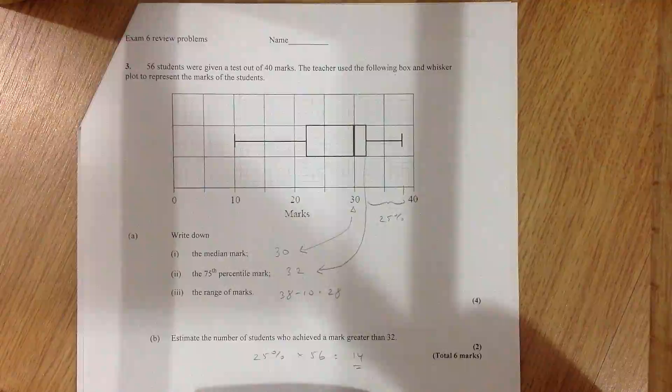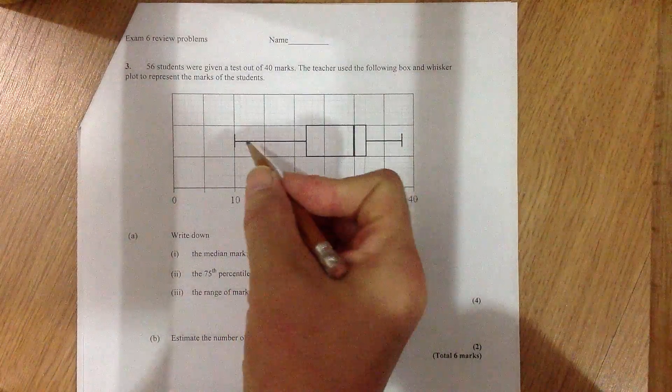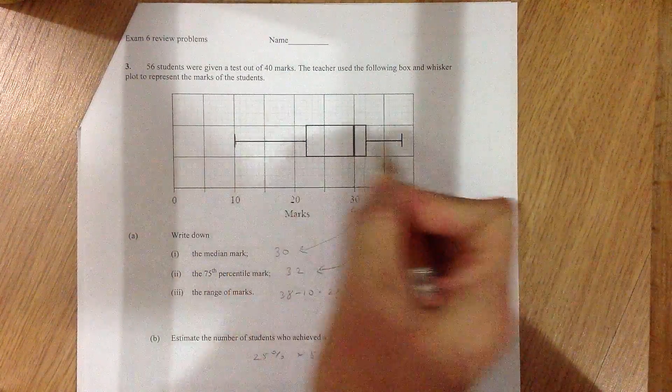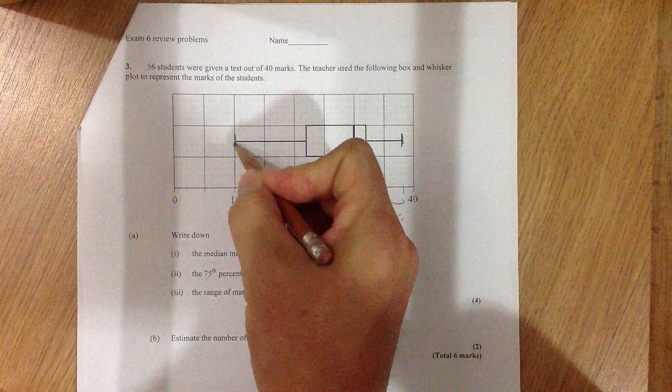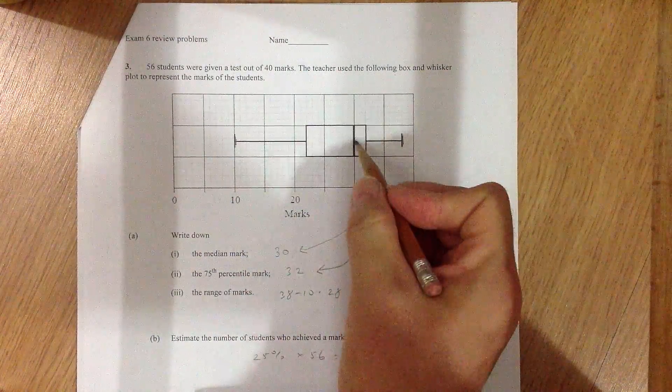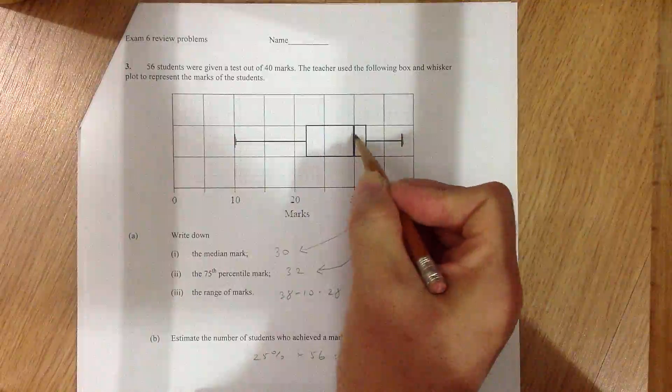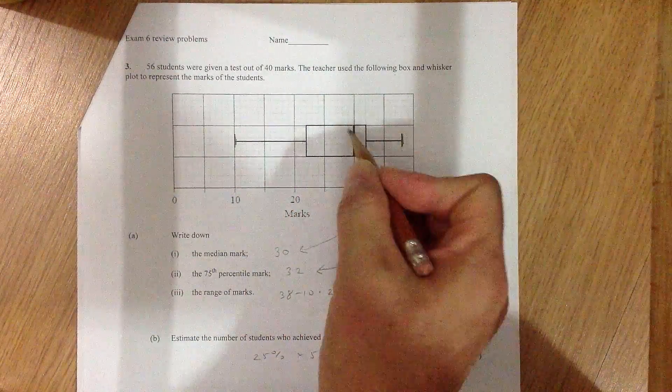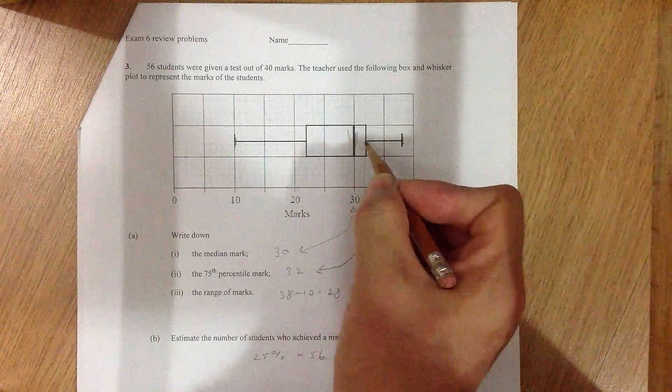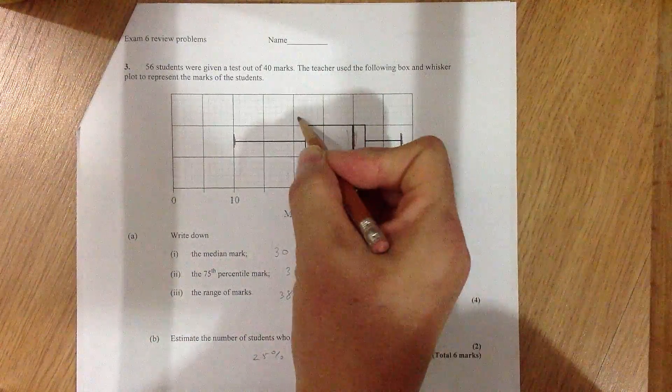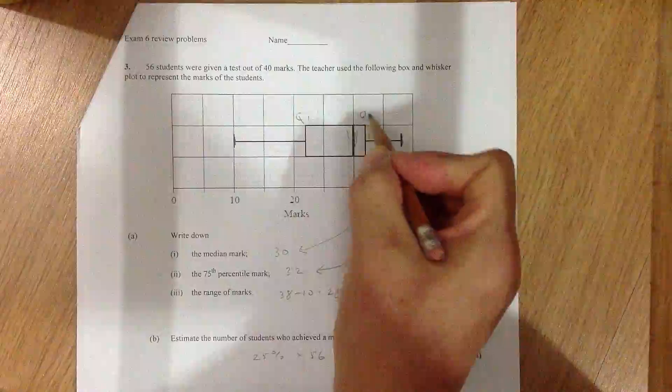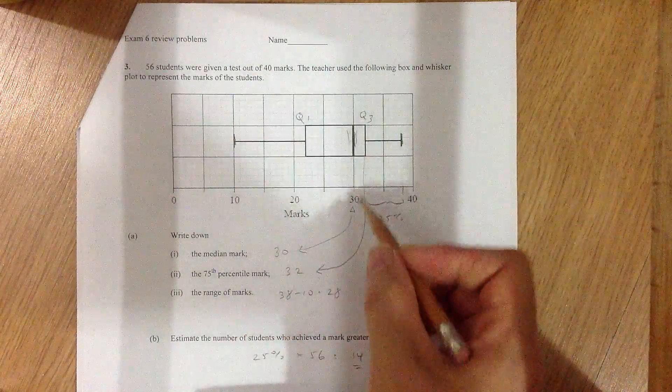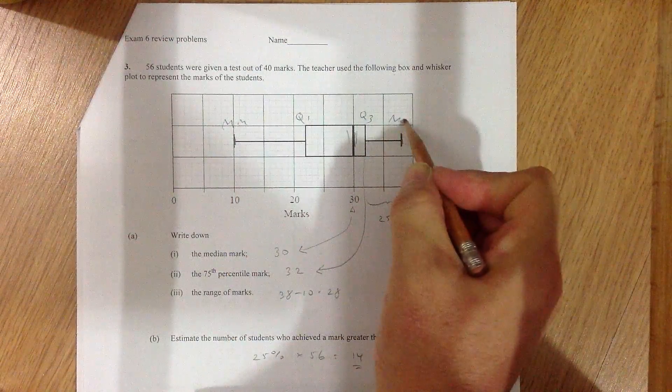So remember that the box and whisker plot has five characteristic numbers, including the min and the max. The median is the middle vertical line, the third vertical line out of five, this one here in the middle of the box. On the left and right side of the box, we have Q1 and Q3.